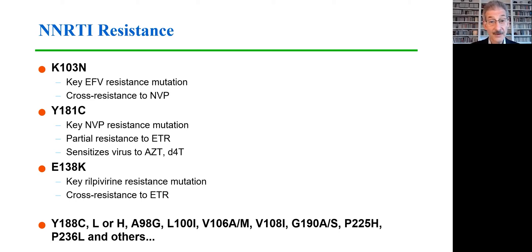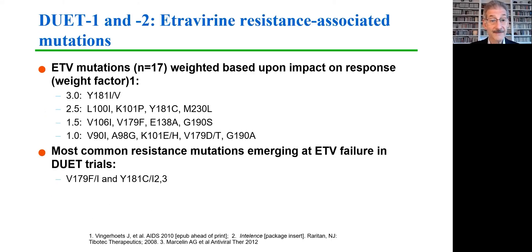It's really important to go to an appropriate source to look up the significance of these mutations, because even the experts have trouble keeping these in mind. Important information about which mutations affect the clinical response to etravirine came from the DUET-1 and 2 trials. By analyzing the proportion of participants whose viruses carried these mutations and how likely they were to achieve virologic suppression, a number of mutations were found and assigned relative weights — ranging from 1 to 3 — as shown in the table. The most common resistance mutations emerging at the time of etravirine failure in these trials were changes at positions 179 and 181.